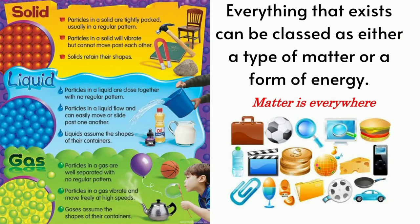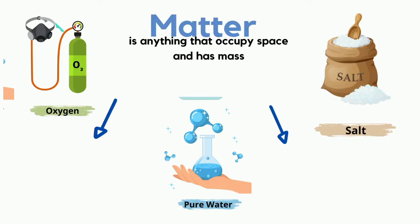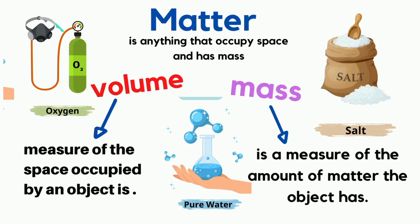Everything that exists can be classified as either a type of matter or a form of energy. Matter is anything that occupies space and has mass. The measure of the space occupied by an object is called volume. The mass of an object is a measure of the amount of matter the object has.